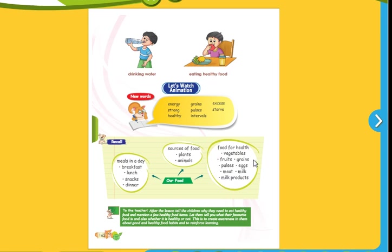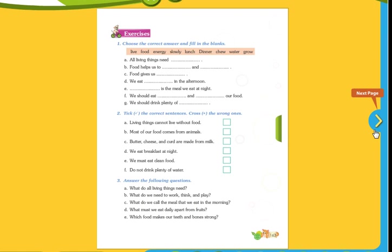Let's continue with the next page. So this is all the exercises here. All living things need dash - food. Food helps us to what? Live and grow. Food gives us energy. We eat dash - we eat lunch in the afternoon.